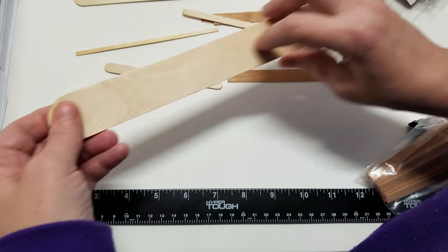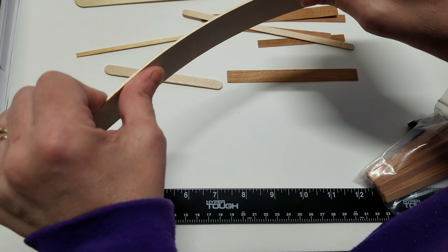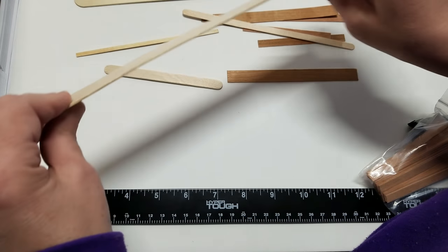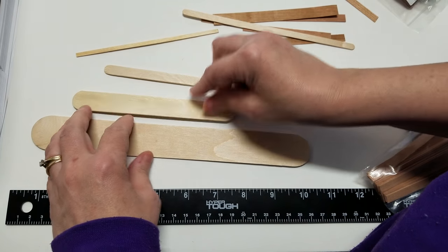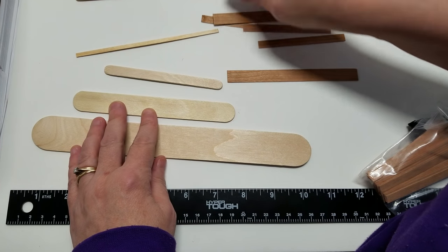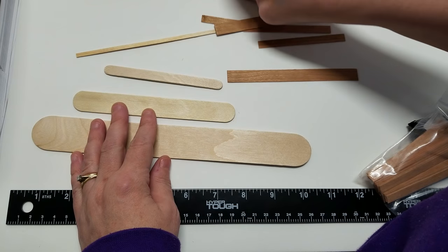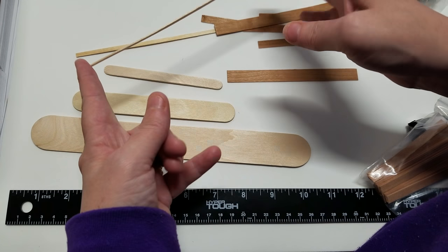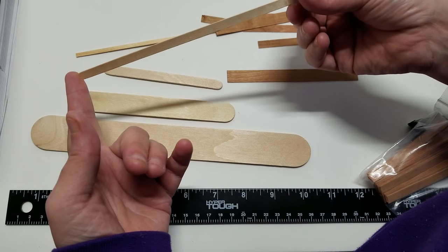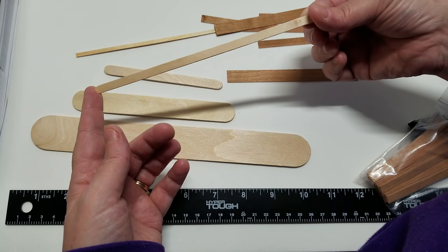So if you want to see the flooring for this coffee stirring stick, it came from Amazon. It's like a thousand of them in a pack. I want to say it was like $14 or something.